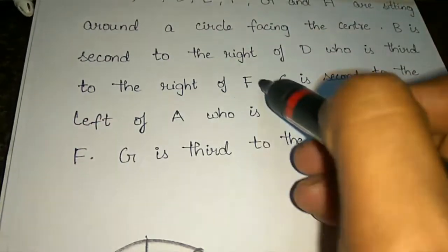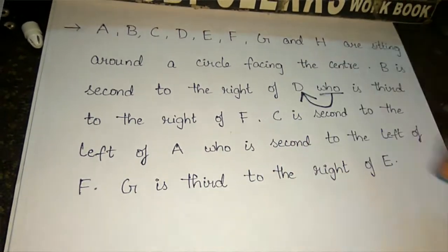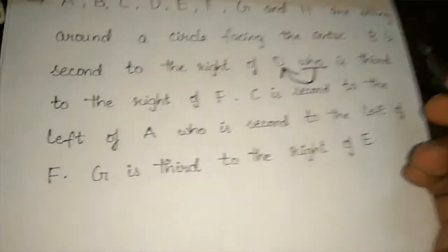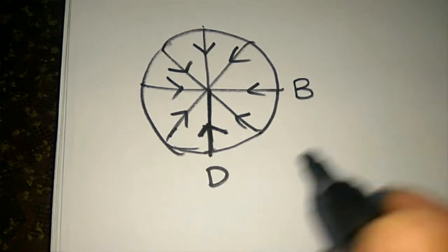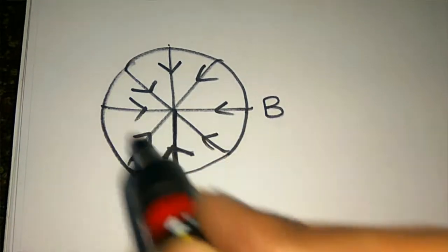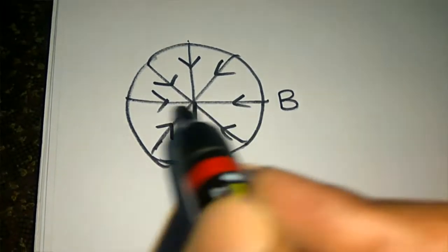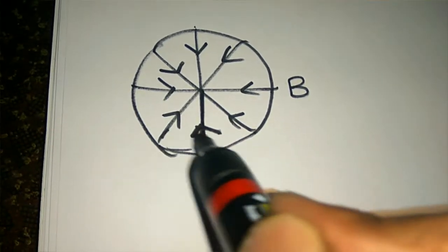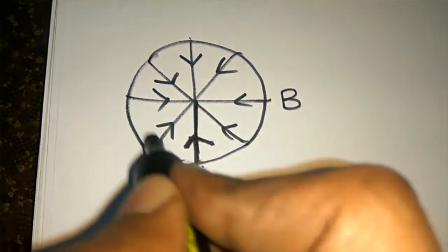Next clue: D is third to the right of F. So from F, going right — first right, second right, third right — that position is D. We already placed D, so from D we can trace back and find where F sits. F is placed accordingly on the diagram.